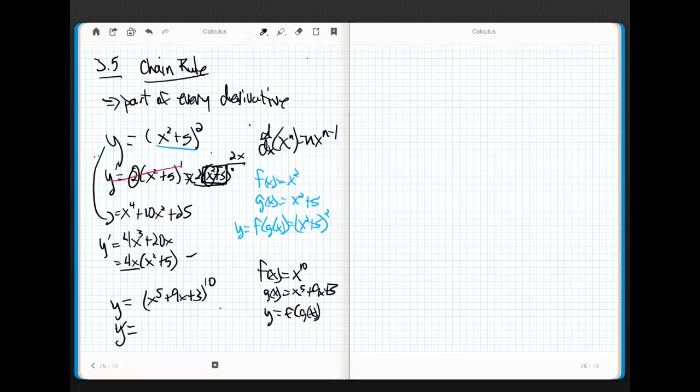So, really, ladies and gentlemen, what chain rule is, we have a product rule, we have a quotient rule, we have a sum, and we have a difference rule, right? We've basically got all of the operators except composition. Chain rule addresses composition. That's what it does.